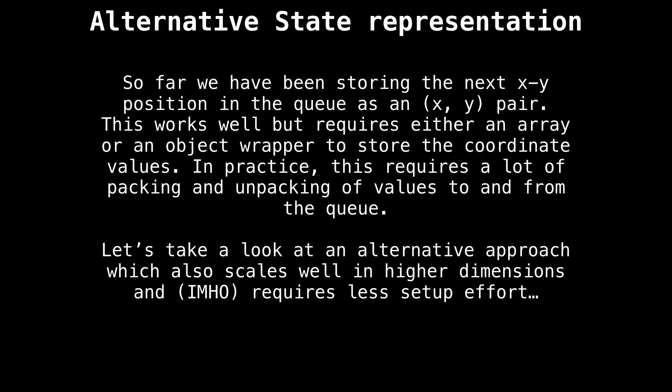I want to talk a little bit about the way we're representing states in our breadth-first search. So far, we have been storing the next XY position in the queue as an XY pair. This works well but requires an array or an object wrapper to store the coordinate values. In practice, this can require a lot of packing and unpacking of values to and from our queue.